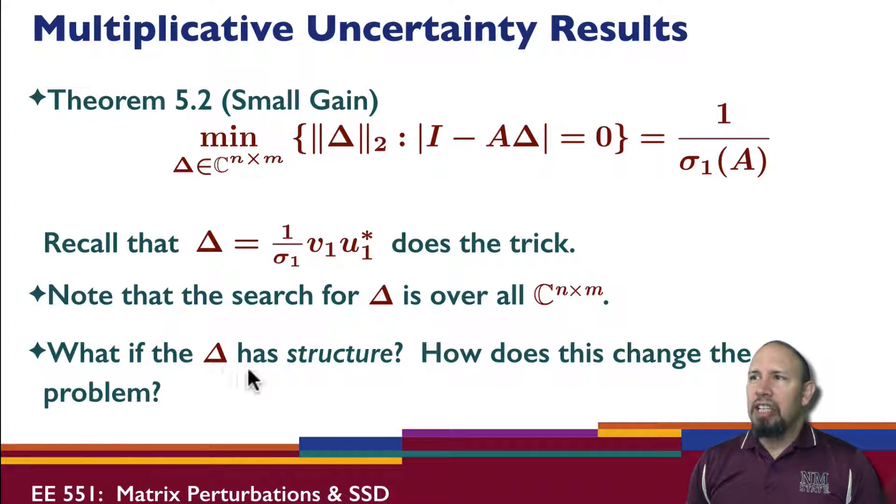But what happens if the delta has structure? For example, what if it has zeros in particular places? In general, this will not have zeros in those particular places. The question is how does this change the problem? This is important for us because often when we have uncertainty, the uncertainty doesn't appear just anywhere in the system or in the problem. It appears in specific places.